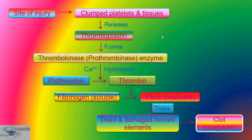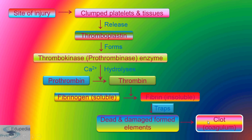At the site of injury, clumped platelets and tissue release thromboplastin, which forms the thrombokinase enzyme. In the presence of Ca²⁺ ions, it hydrolyzes prothrombin into thrombin. Thrombin then helps convert fibrinogen present in the plasma into insoluble fibrin. Trapped dead and damaged formed elements form a clot, also called a coagulum.